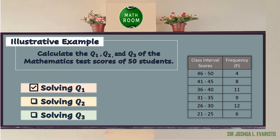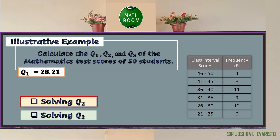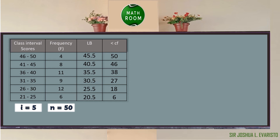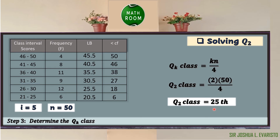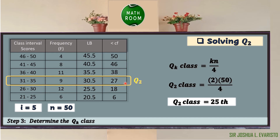After solving quartile 1, let us proceed solving for quartile 2, the median. Since we already identified the lower boundaries and less-than cumulative frequency, we proceed to step 3: determine the Q sub 2 class. Using the formula Q sub k class = k × n ÷ 4, by substitution Q sub 2 class = 2 × 50 ÷ 4 = 25. Since 25 is between 18 and 27, we choose the higher value, which is 27. Hence, the Q sub 2 class is found in the third class.